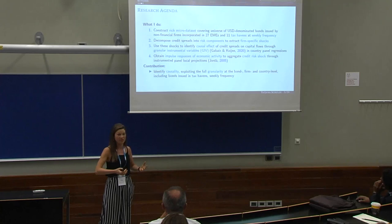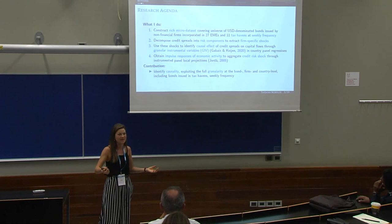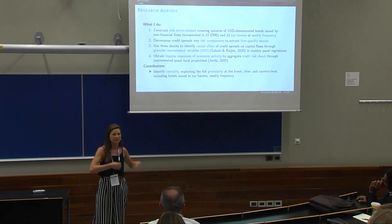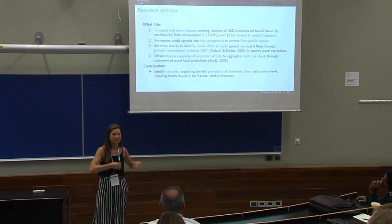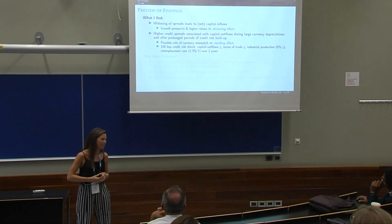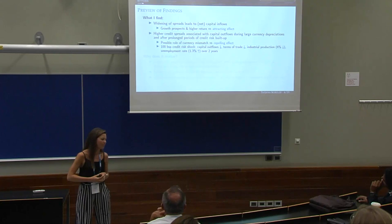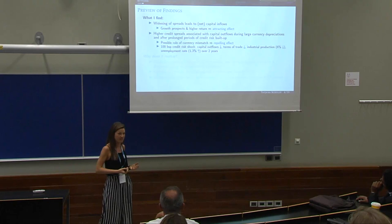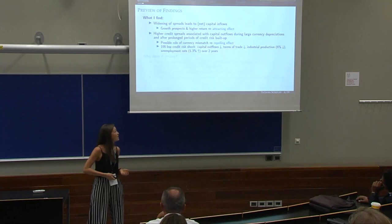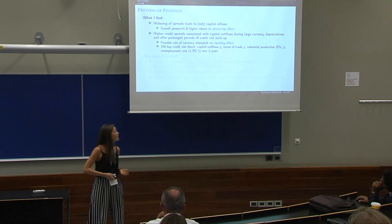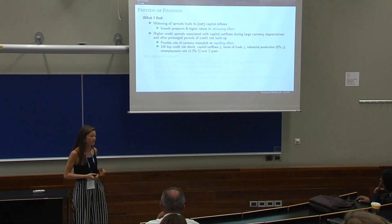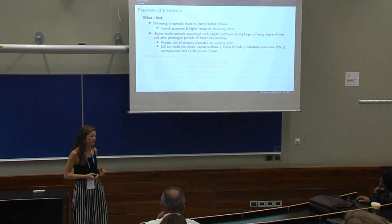That country-level instrument allows me to identify the elasticity of capital flows with respect to a change in credit risk, and also to quantify the impact of an adverse credit risk shock. I obtain impulse responses of economic activity to this aggregate credit risk shock in instrumental panel local projections. I go two steps beyond the existing literature by not just aggregating credit spreads at the country level, but really exploiting the full heterogeneity in spreads at the bond level, firm level, and country level to make statements about the granular origin of macroeconomic fluctuations.